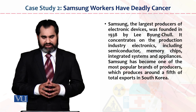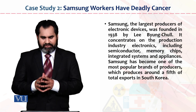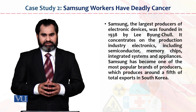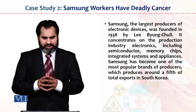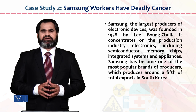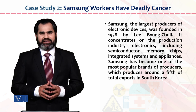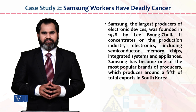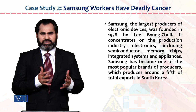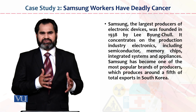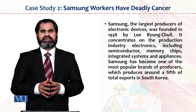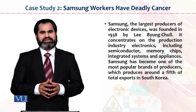Samsung's production includes industry electronics, further including semiconductors, memory chips, integrated systems, and appliances. Some of these products are used in computers, some in home appliances, some at home, in houses, and in offices. So all of these deal with electronics.